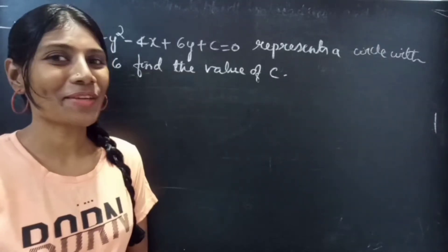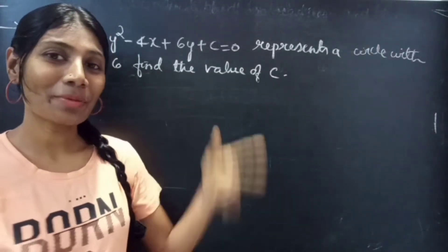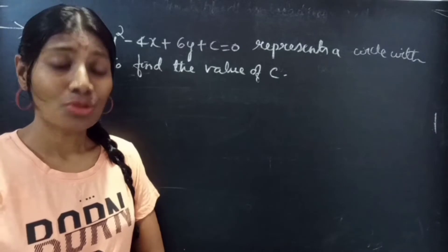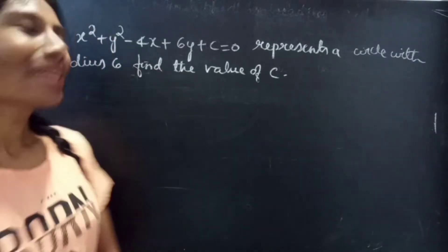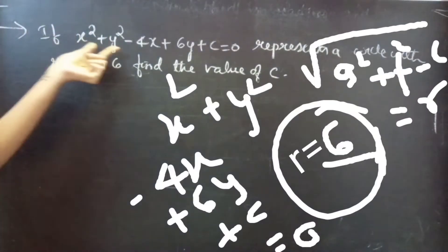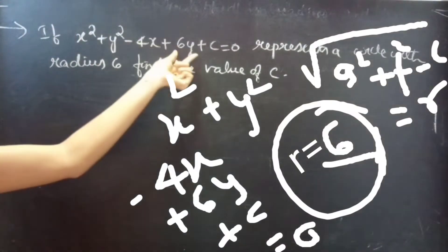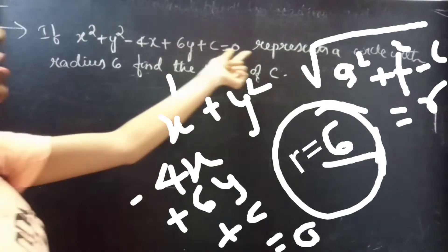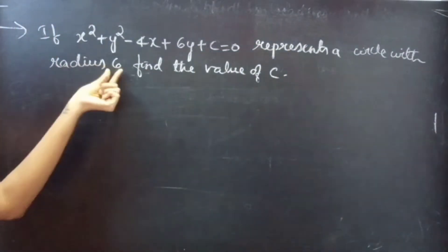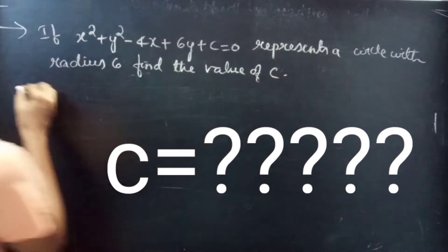Hello everyone, this is Akalpana here. In this video we are going to see a problem from circles. So let's get going. Problem: if x² + y² - 4x + 6y + c = 0 represents a circle with radius 6, find the value of c.